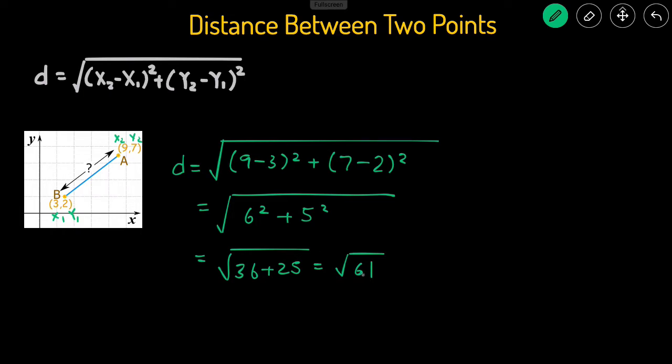So we can just leave it like this, or we can plug this into the calculator. The square root of 61 gives us 7.81.